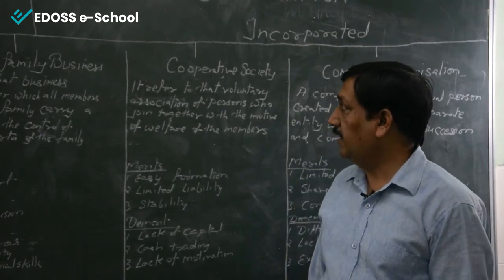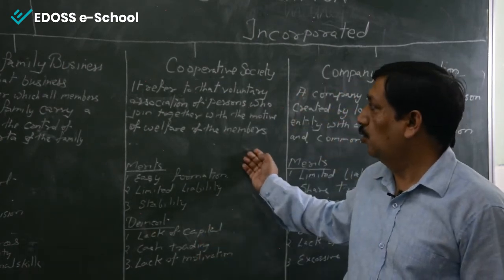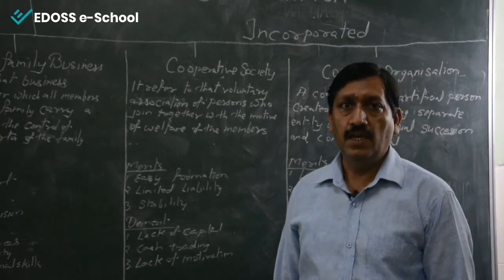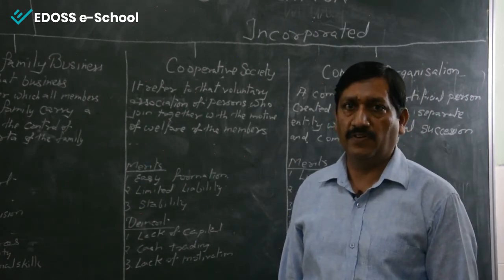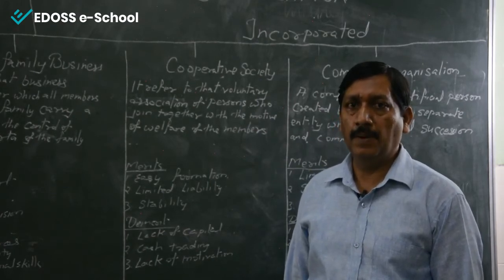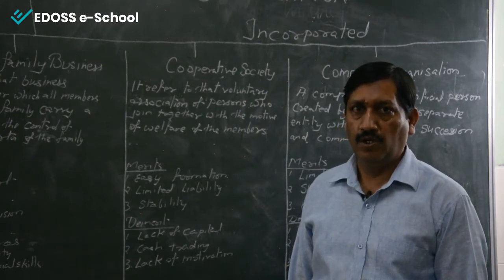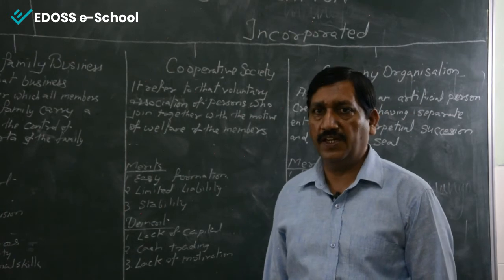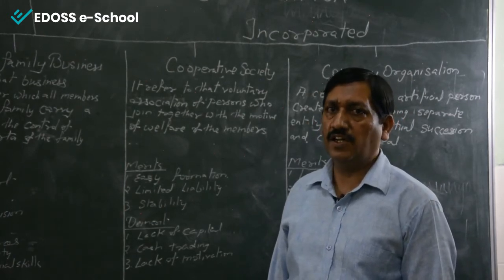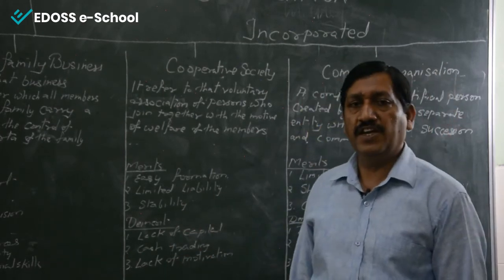Now we have the incorporated forms of business organization. The first is cooperative society. It refers to a voluntary association of persons who join together with the motive of welfare of the members — they are not working for profit, only for the welfare of society and members. Profit is not the primary goal. A minimum of 10 members is required to start a cooperative society.